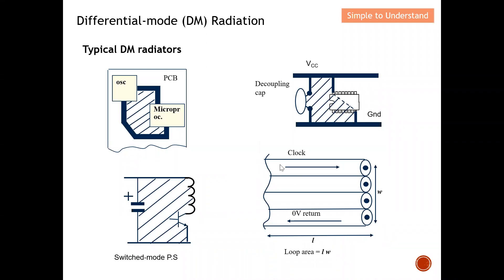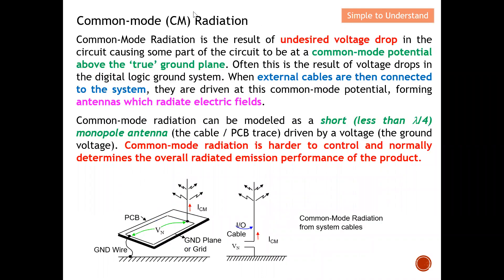The same applies to a clock signal — any signal needs a return path. When the signal travels and returns through the ground, it forms a loop — essentially a patch antenna or loop antenna. Differential mode radiation can happen from all these typical differential mode radiators, including clock signals, power loops, and switching circuits.